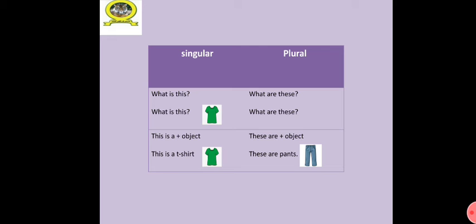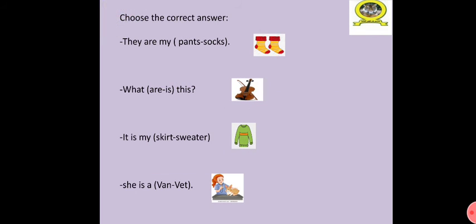Now choose the correct answer. Number one, they are my pants or my socks. Socks, very good. Number two, what are or what is this. It's a singular picture so I'm going to choose is. Number three, it's my skirt or my sweater. It's my sweater, excellent. She is a van or she's a vet. She is a vet, of course.